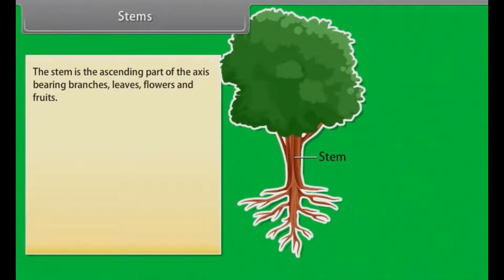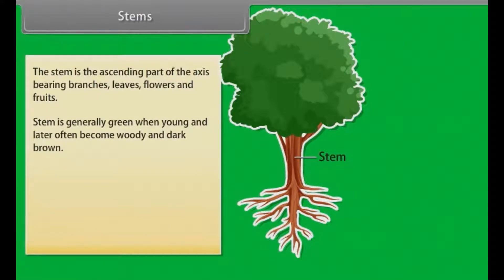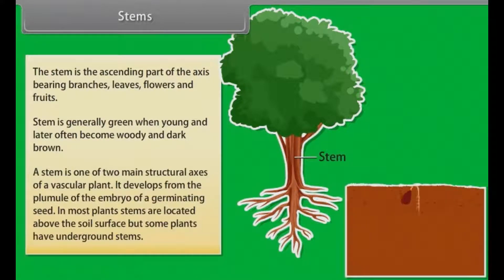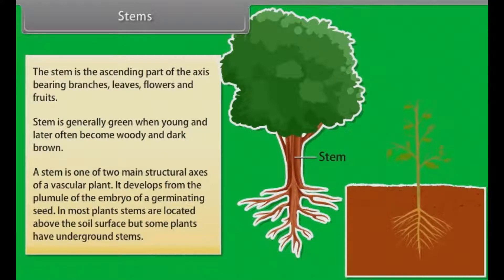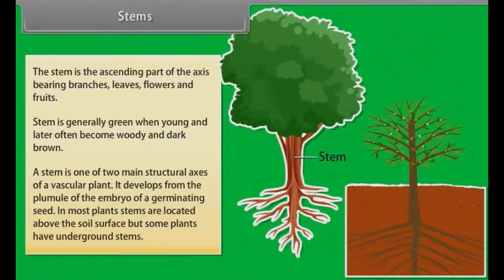The stem is the ascending part of the axis, bearing branches, leaves, flowers and fruits. Stem is generally green when young and later often becomes woody and dark brown. A stem is one of two main structural axes of a vascular plant. It develops from the plumule of the embryo of a germinating seed. In most plants, stems are located above the soil surface, but some plants have underground stems as well.